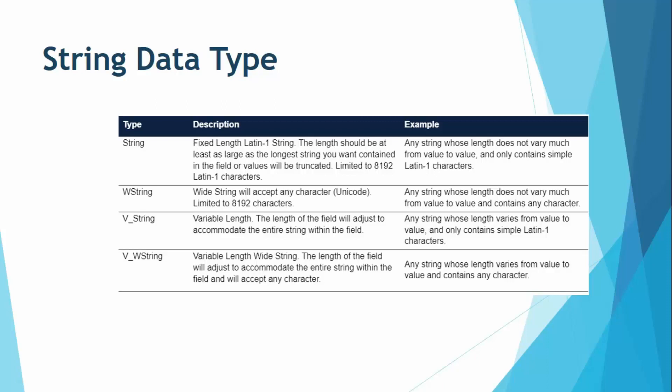The four string subcategories are: string, v_string, w_string, and v_w_string. String and w_string are fixed length — you set a predefined length, for example 100 characters, and it always occupies that length. W_string can hold more international characters. V_string and v_w_string use variable length, meaning no predefined length is set; they adjust to the actual length of the value they hold.